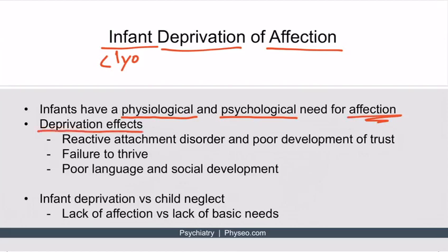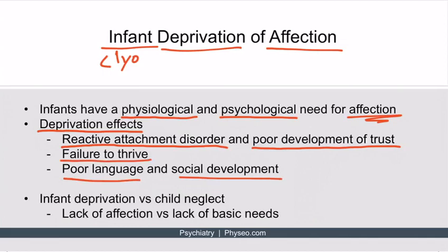Infants who have suffered deprivation of affection can develop reactive attachment disorder later. The child can be withdrawn, sad, or fail to be comforted when upset — they just kind of close off. They can have a difficult time developing trust. It can also manifest as failure to thrive, and there can be poor language and social development. They may also have disinhibited attachment to strangers, which is an example of poor social development.